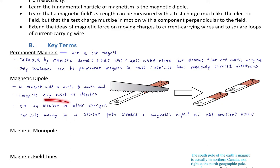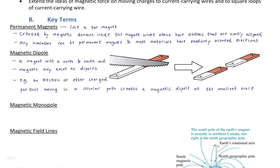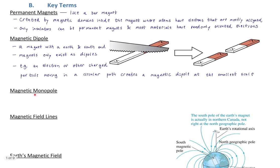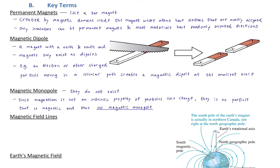Magnets only exist as dipoles. Look at what happens when we cut a bar magnet — a large magnetic dipole — in half: we get two smaller magnetic dipoles. You can continue to do that until you get down to the atomic scale, but you can never cut them so much that you get an individual pole. You can't get the south by itself or the north, because magnetic monopoles don't exist. There is no magnetic monopole. Magnets always come in pairs of north and south poles. Since magnetism is not an intrinsic property of particles like charge, there is no particle that is magnetic.